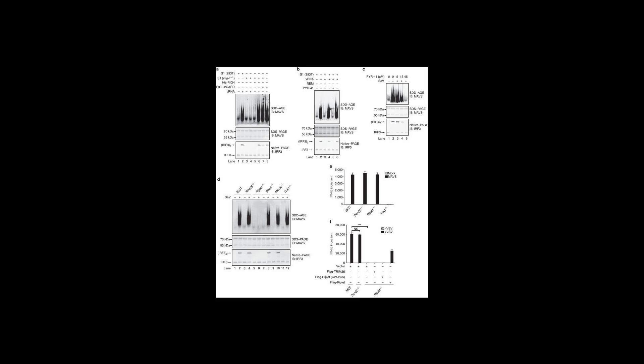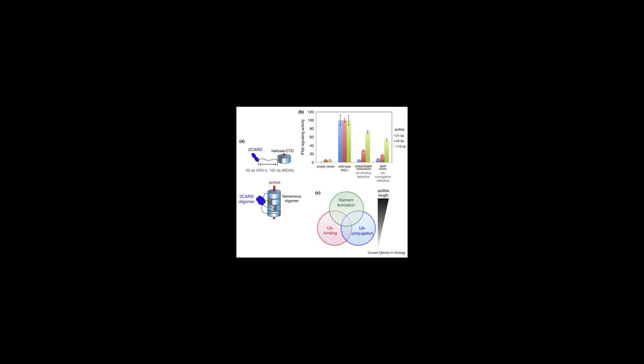RIG-I, specifically, detects a 5-prime triphosphate addition on single-stranded RNA as a means of differentiating from self-RNA.